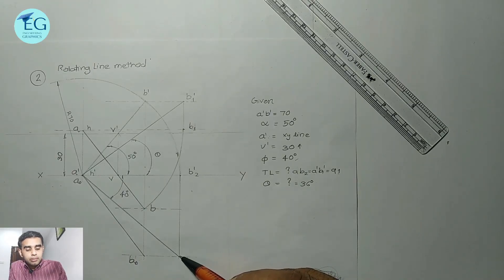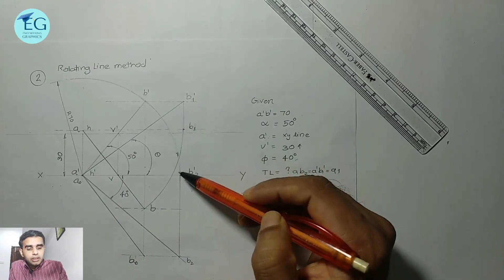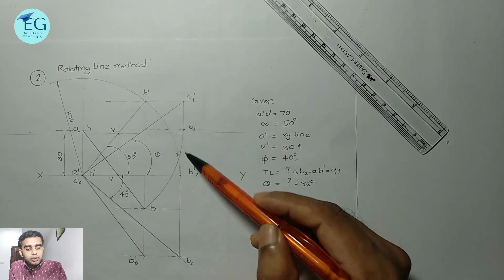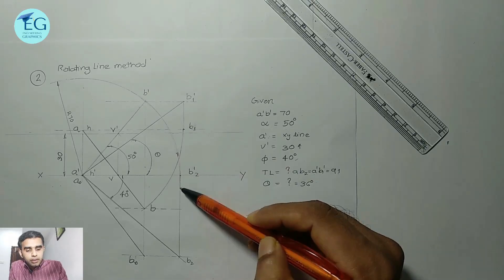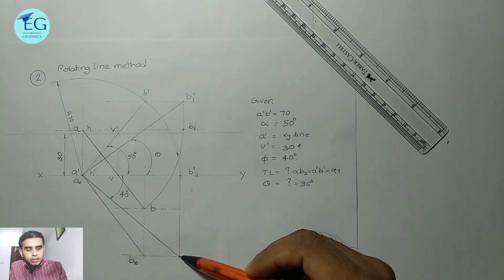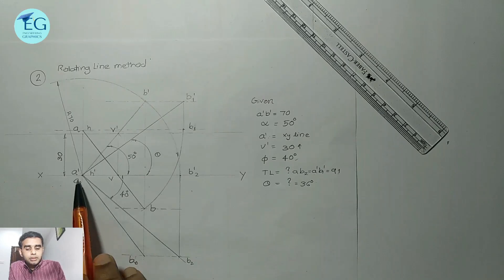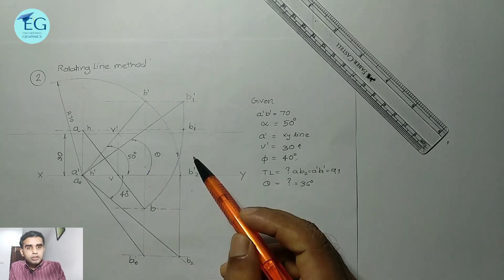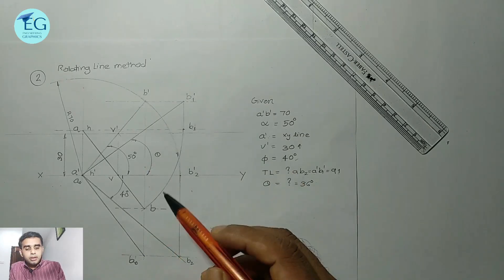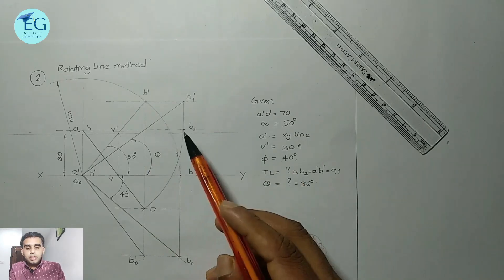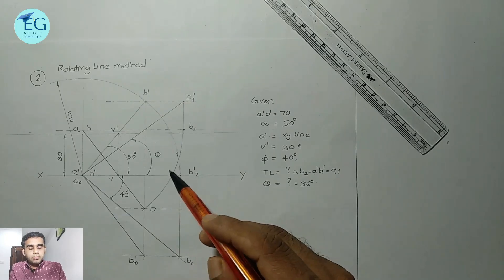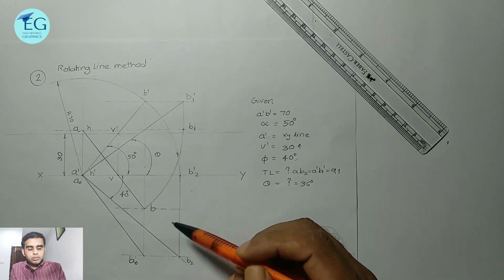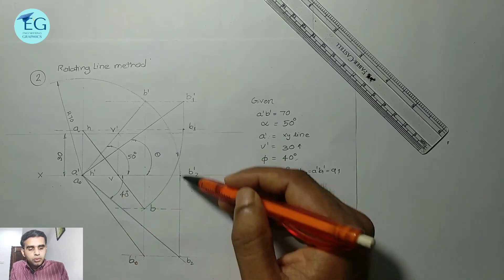We use the XY line and rotate B2'. The projector then comes to A-B2. A-B2 is the true length. The true length A-B2 is equal to 91 mm.